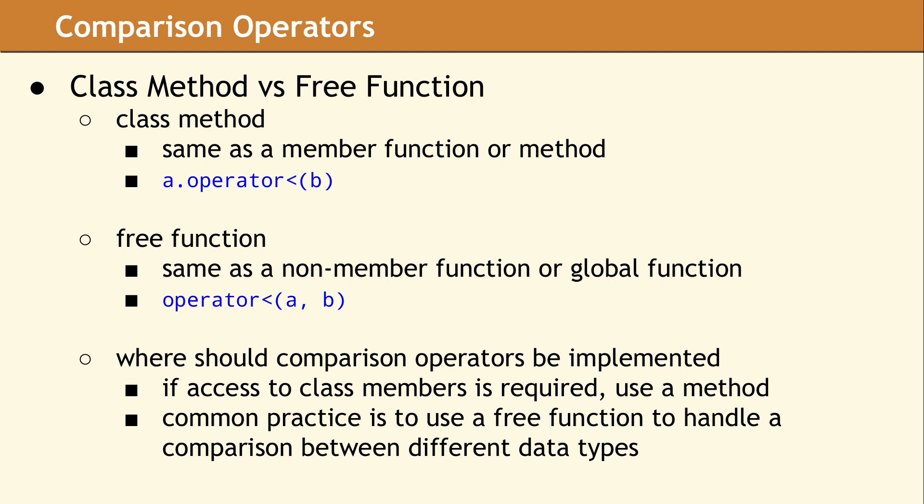A free function can also be referred to as a non-member function or a global function. When a free function is used to implement a comparison operator, the two values are passed as normal function parameters. When implementing a comparison operator as a free function, either one or both of the values can be implicitly converted, whereas only argument B can be converted in the method implementation.